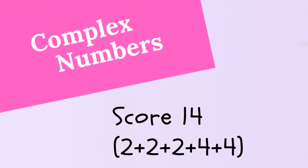The first chapter is Complex Numbers — it is very easy. There are only 2 exercises, and you need to focus on the 1st exercise. If you are perfect in this chapter, you can score 14 marks. There are 3 VSAQs and 2 SAQs, totaling 14 marks.